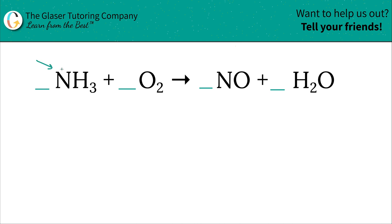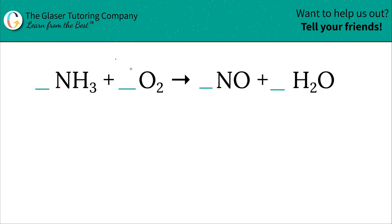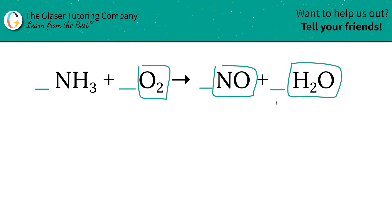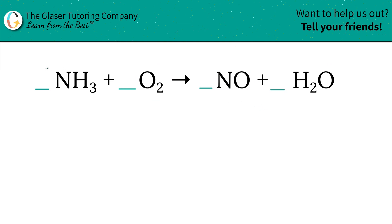I'm going to work with the element I first see, going left to right — that's nitrogen. I want to balance nitrogen because it exists in only one compound on the left and only one compound on the right. If you started with oxygen, it exists in one compound on the left but in two compounds on the right — don't work with that first; save those for the end.